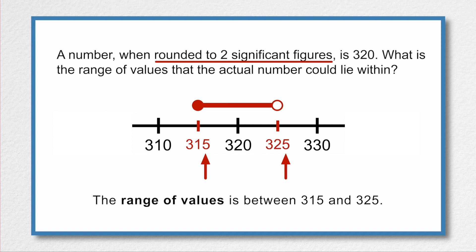Notice that in each case, for finding the biggest and the smallest number, the last non-zero digit was 5, because 5 is the determining digit. Remember when rounding: if it's 5 or more, we round up.